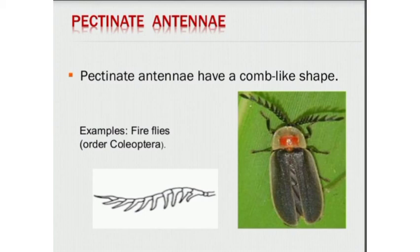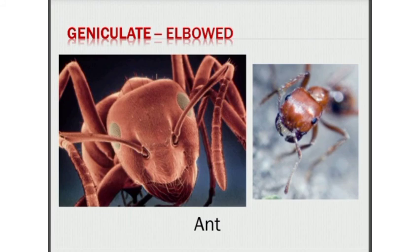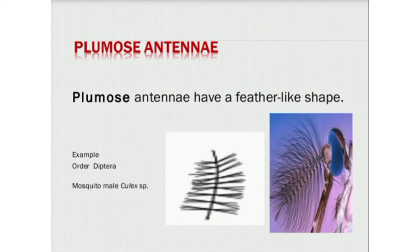Geniculate antennae are hinged or bent like an elbow. They are from the order Hymenoptera. Examples are ants. Next is bipectinate antennae, which have a feather-like shape. Examples are moths, from the order Lepidoptera. Next is plumose antennae, which also have a feather-like shape. Examples are male mosquitoes, from the order Diptera.